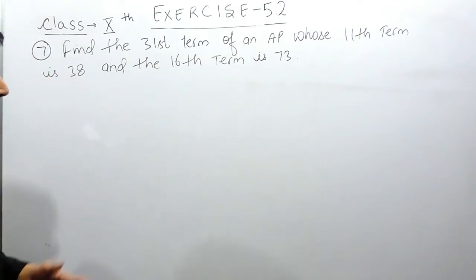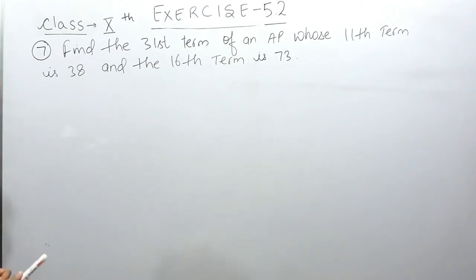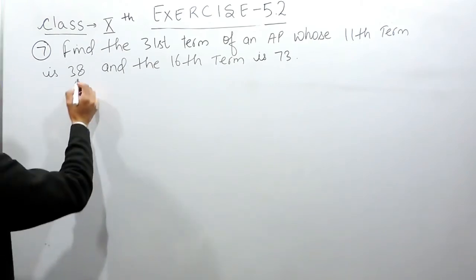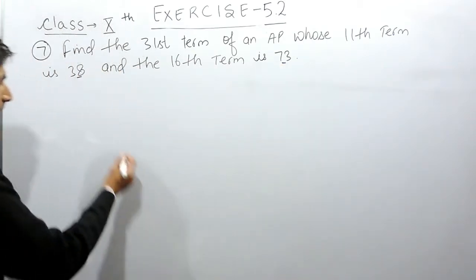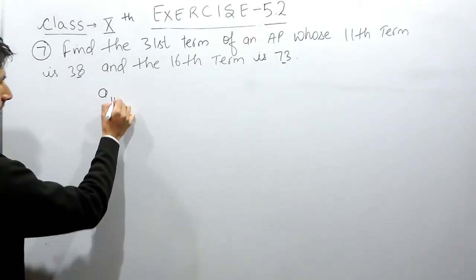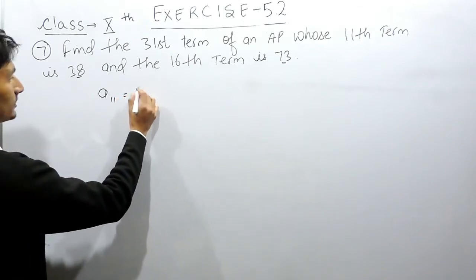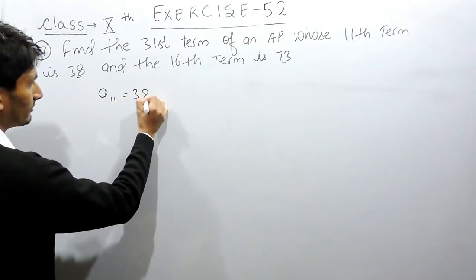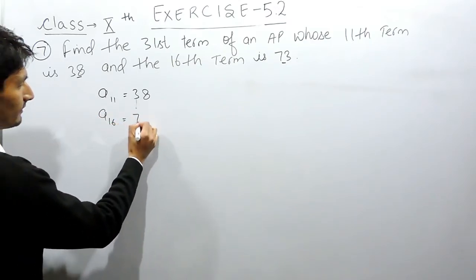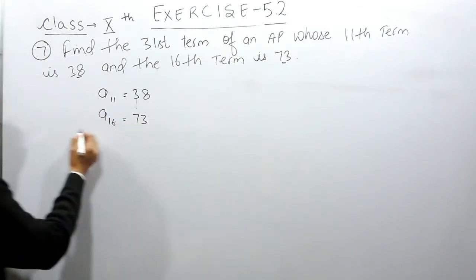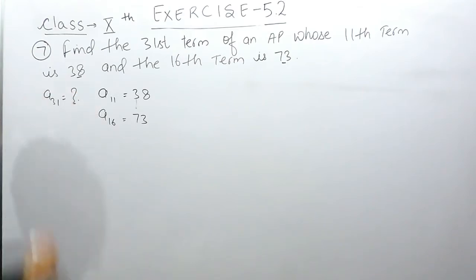Now we know what APs are, and in this case the 11th term is given to us and the 16th term is given to us. So the 11th term is equals to 38, and the 16th term is given as 73. You have to find out the 31st term.